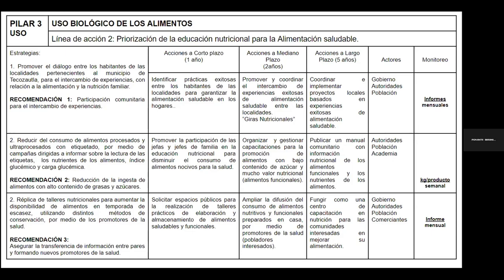También se trabaja en reducir el consumo de alimentos procesados por medio de campañas dirigidas sobre cómo leer etiquetas, ver qué nutrientes tienen, y revisar términos como índice glucémico y carga glucémica para que las personas diabéticas puedan darse cuenta de que pueden obtener buena salud a partir de lo que comen. Se hacen réplicas de talleres nutricionales para aumentar la disponibilidad de alimentos en época de escasez, utilizando métodos de conservación y apoyándose en promotores de salud formados como líderes comunitarios.